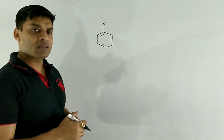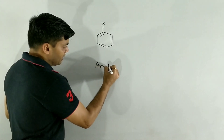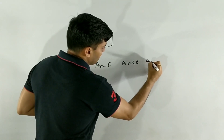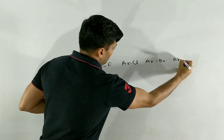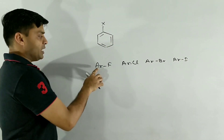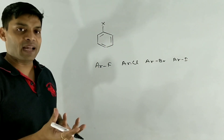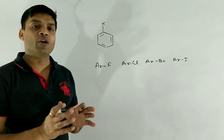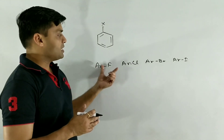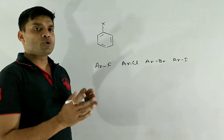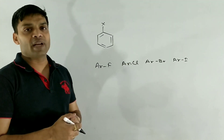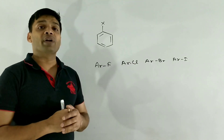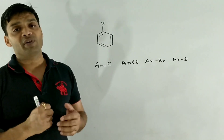For example, if we compare the four aryl halides — ArF, ArCl, ArBr, and ArI, representing fluorobenzene, chlorobenzene, bromobenzene, and iodobenzene — the boiling points of these monohalobenzenes keep on increasing with the increase in molar mass as well as the surface area of the halogen. Here, Ar is simply a representation for any aryl group, just as R represents an alkyl group.